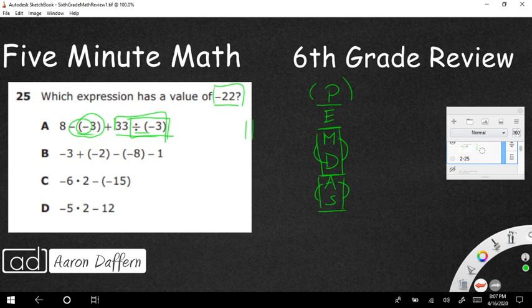But since it's 33 divided by negative 3, this is a positive 33 and a positive and negative always mixed together to make a negative. So this is 33 divided by negative 3 is going to end up being negative 11. So I'm going to recopy my eight minus parentheses minus three plus, and now I've got this negative 11.